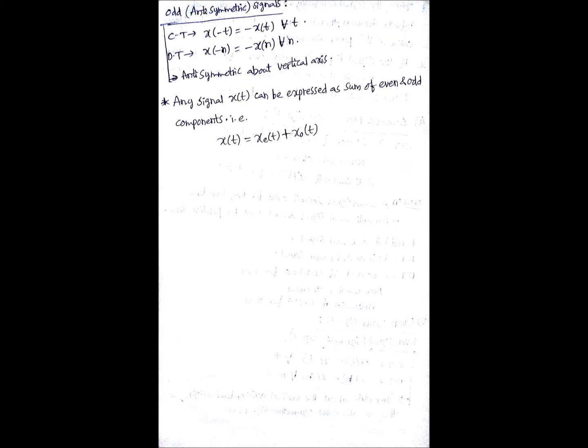It is antisymmetric about vertical axis. Any signal x(t) can in general be represented as the sum of even and odd components, that is x(t) equals xe(t) plus xo(t). You can represent any signal with this sum. You can easily verify this proof also.